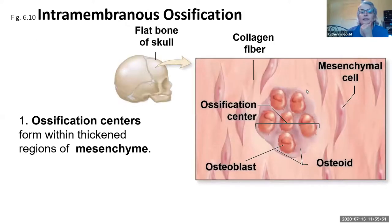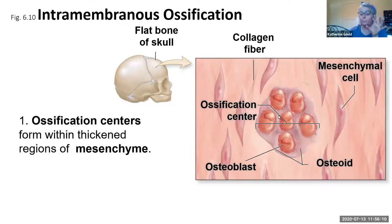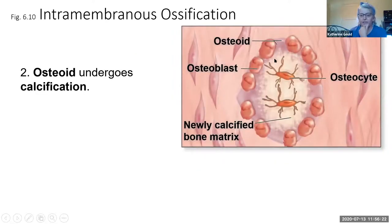Here is how intramembranous ossification works. You have an ossification center, which is a special area of mesenchyme — mesenchyme being the modified stem cells that create connective tissues. In this case, the mesenchyme is going to produce bone. The cells inside this ossification center produce osteoid and tons of collagen.